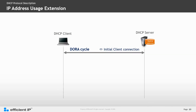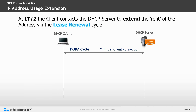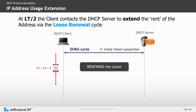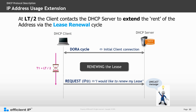The next scenario is IP address usage extension, where the DHCP client has an IP address and would like to continue using it. At the halfway midpoint of the lease timer, sometimes referred to as T1, the client contacts the DHCP server to extend the lease and transitions to the renewing state. The DHCP client sends a unicast Request message with its IP address to the DHCP server. The DHCP server acknowledges this by sending back an ACK message with the IP address and a new lease time.